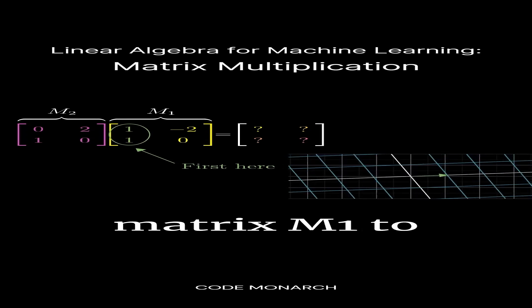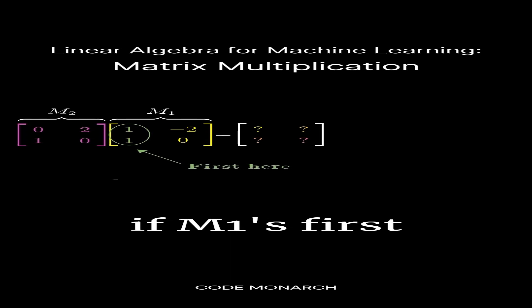Matrix multiplication is essential for data transformations. Imagine you have a vector, i-hat. Applying matrix M1 to i-hat will change its coordinates. For example, if M1's first column is 1 1, i-hat moves to 1 1.